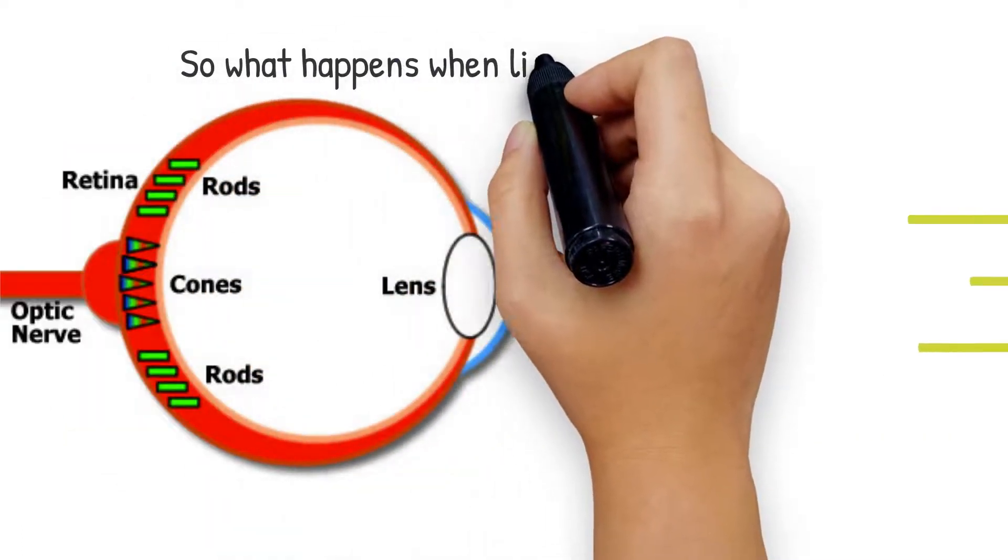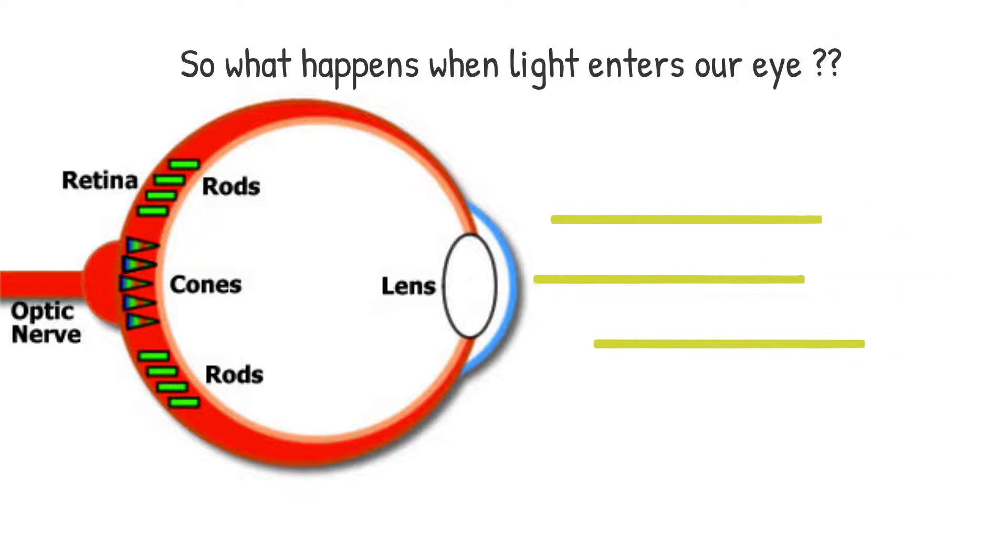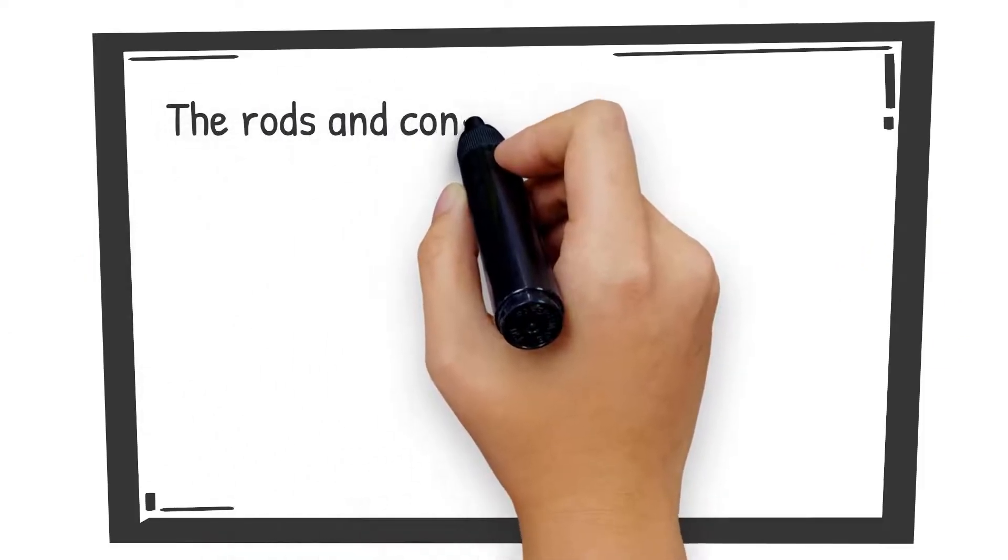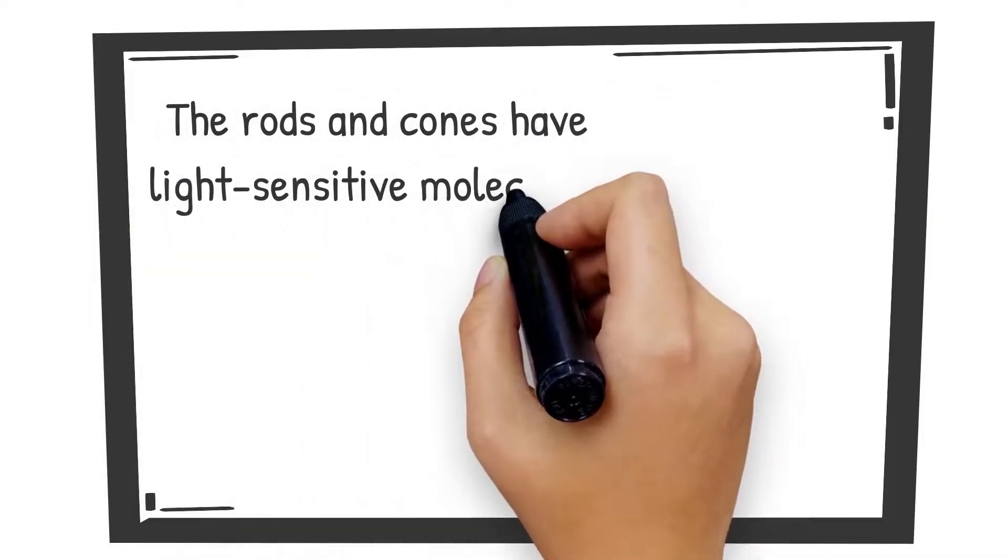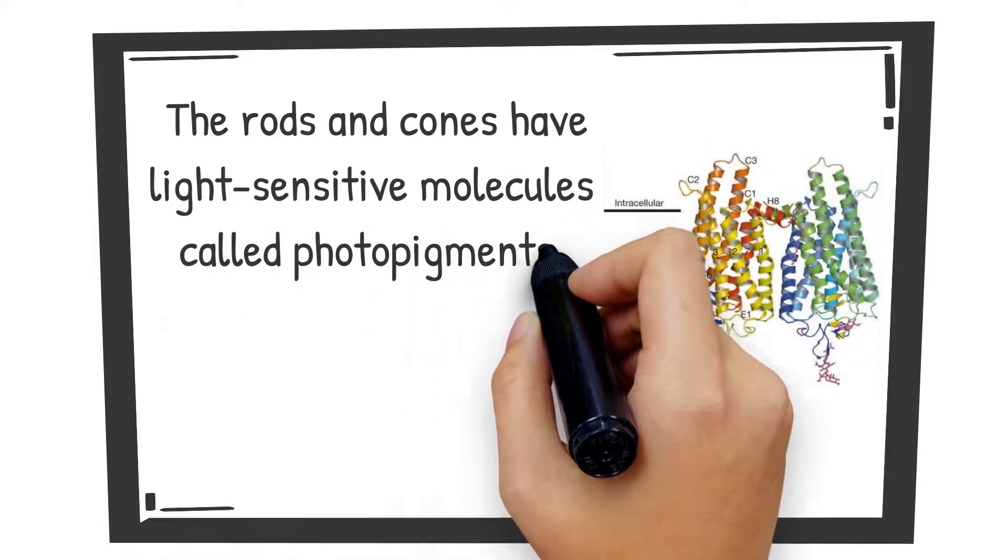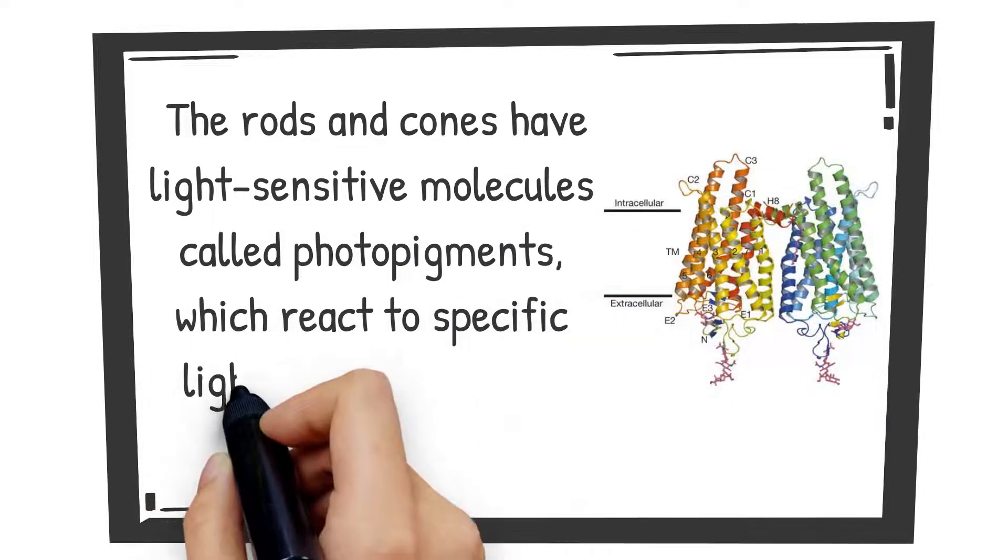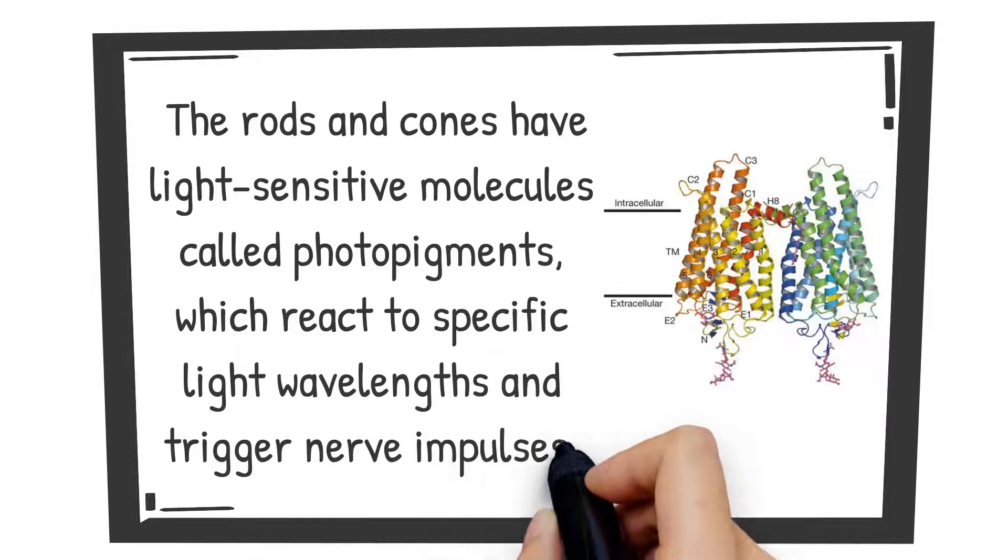So what happens when light enters our eye through the cornea and lens? The rods and cones have light-sensitive molecules called photopigments, which react to specific light wavelengths and trigger nerve impulses.